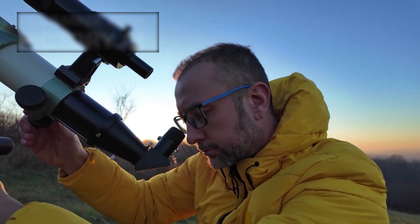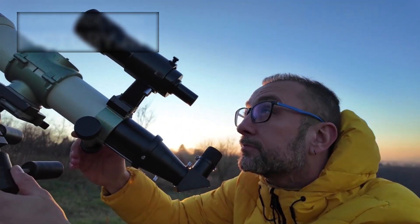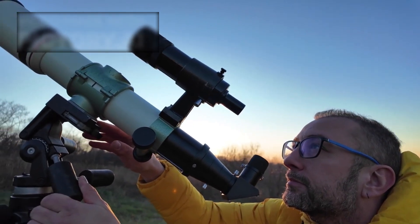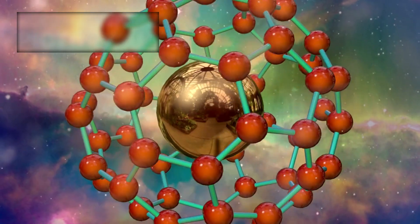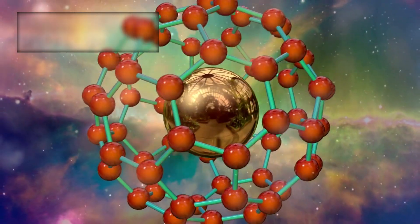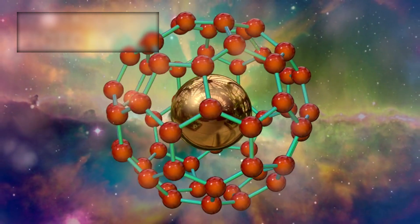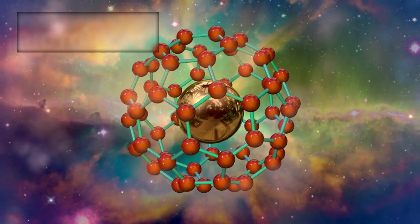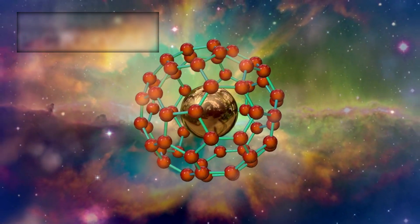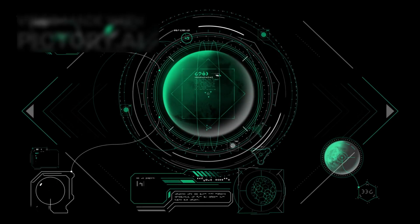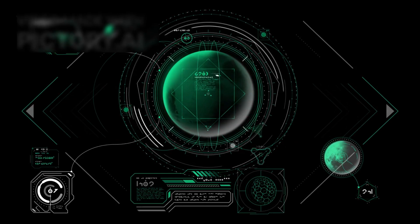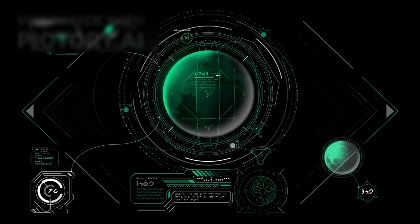While the James Webb Telescope excels at characterizing planetary atmospheres, it was primarily designed for other scientific goals. It specializes in detecting variations in water vapor, carbon dioxide, and methane. Although it has limitations in detecting free oxygen, a crucial sign of life, it can search for other important molecules like ozone.